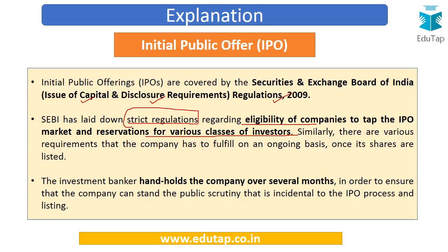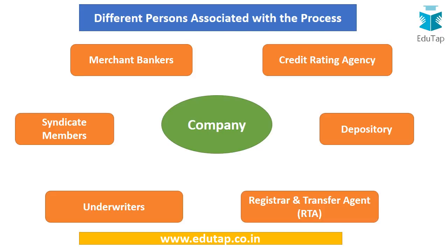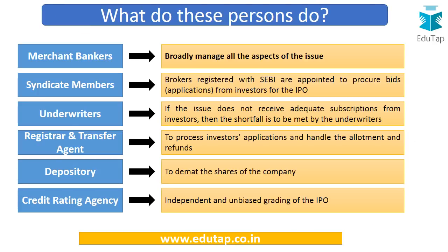Investment bankers are one of the most important persons associated with an IPO — they hand-hold the company, assisting it to ensure it can withstand public scrutiny incidental to the IPO process and listing. They help the company comply with all different sets of regulations so it can come up with an IPO, all contained in the SEBI ICDR Regulations 2009. Other key persons associated with the IPO process include merchant bankers, credit rating agencies, depositories, registrar and transfer agents, underwriters, and syndicate members.